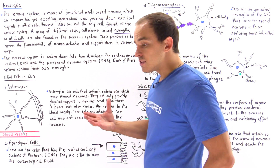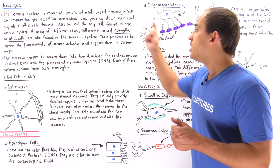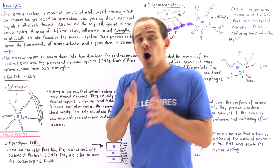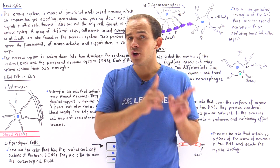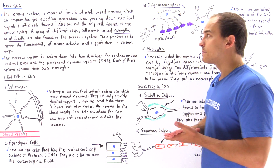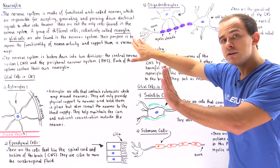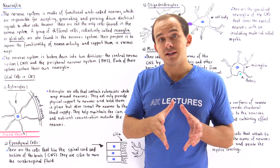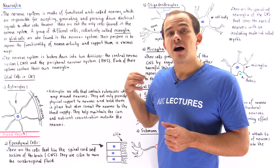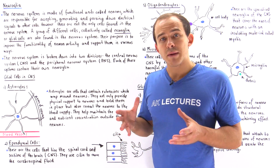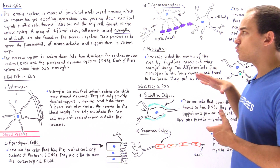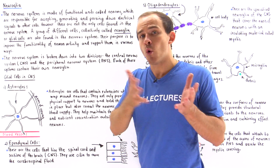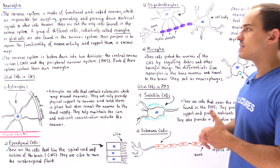All these other cells fall into a category that we call Neuroglia. Neuroglia, also known as glial cells, are all the other cells aside from the neuron found inside our nervous system. The purpose of Neuroglia is to basically increase the effectiveness and functionality of these neurons and to support these neurons in different ways. That's exactly why Neuroglia or glial cells are commonly known as the support cells of the nervous system.